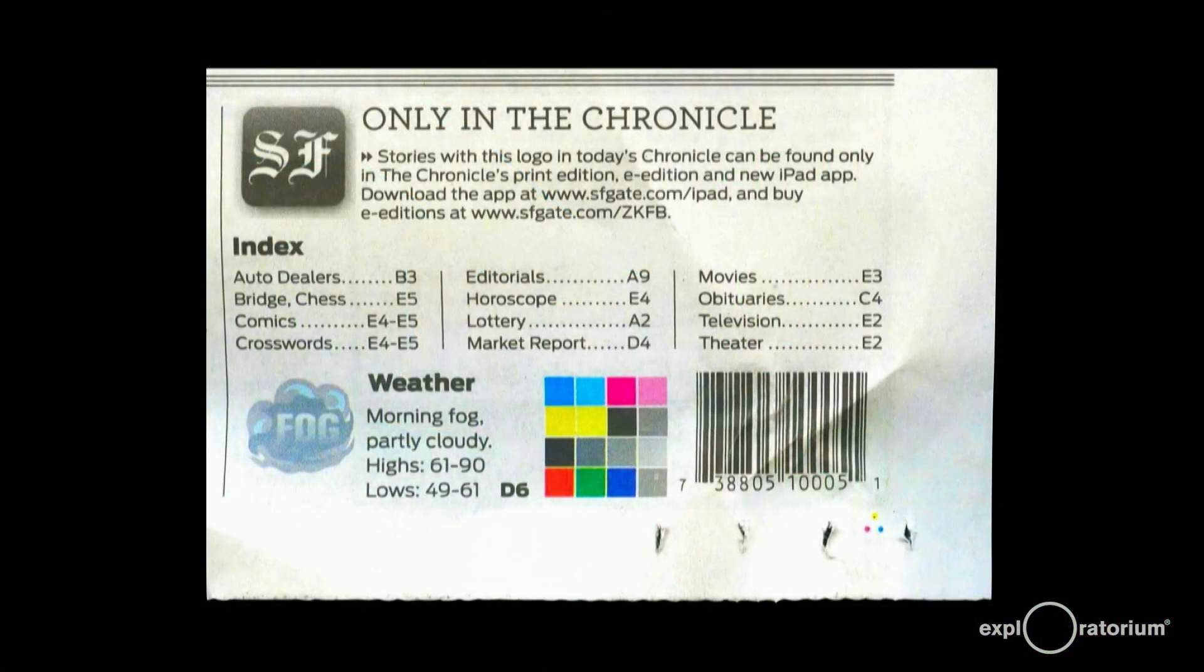A real-world example of subtractive color mixing is color printing. Next time you get a newspaper, notice this little square from the front page. See the test colors? Here you see the primaries: cyan, magenta, and yellow, and the colors that result from mixing them. The printer monitors this array of colors to make sure the printing process produces the correct amount of each color.